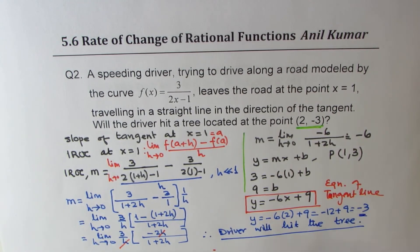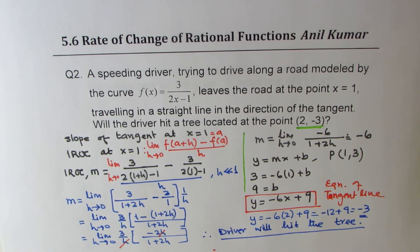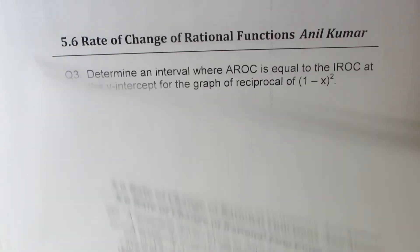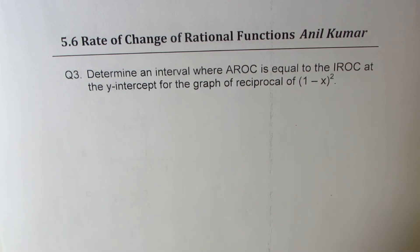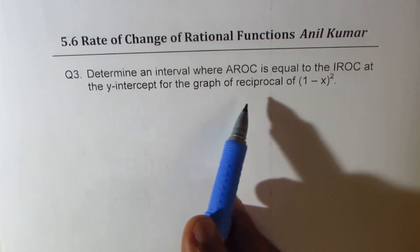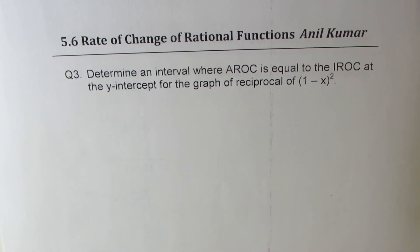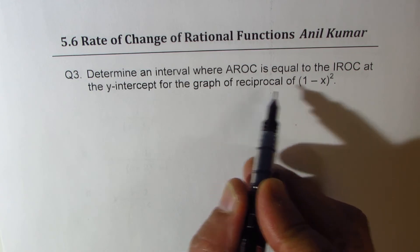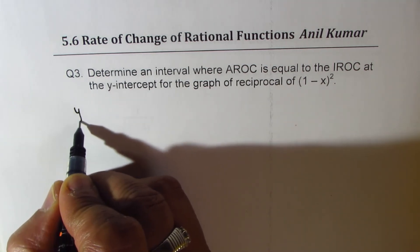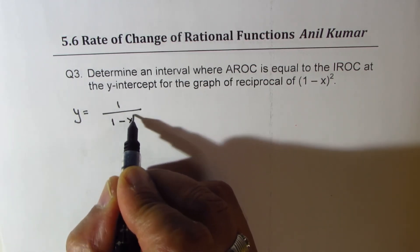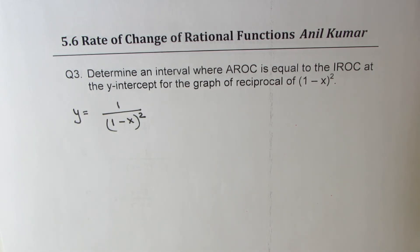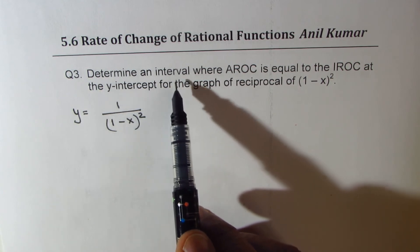This is a very popular test question, so I'd like you to go through this solution once again. Now let's look into question number 3: determine an interval where average rate of change equals instantaneous rate of change at the y-intercept of the graph of the reciprocal of (1 minus x) squared. The function is y equals 1 over (1 minus x) squared.